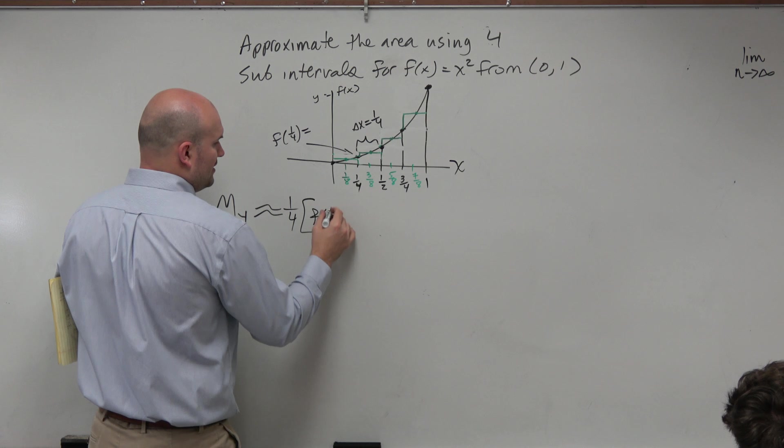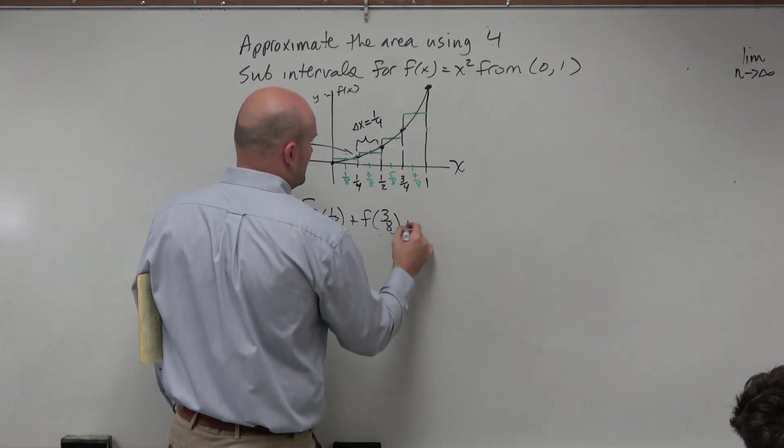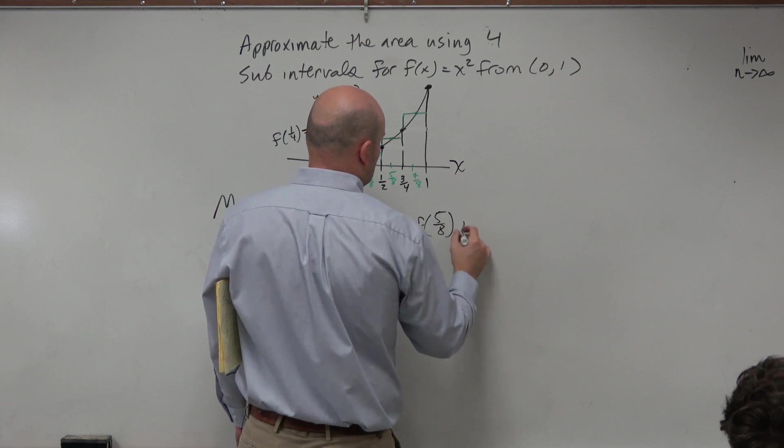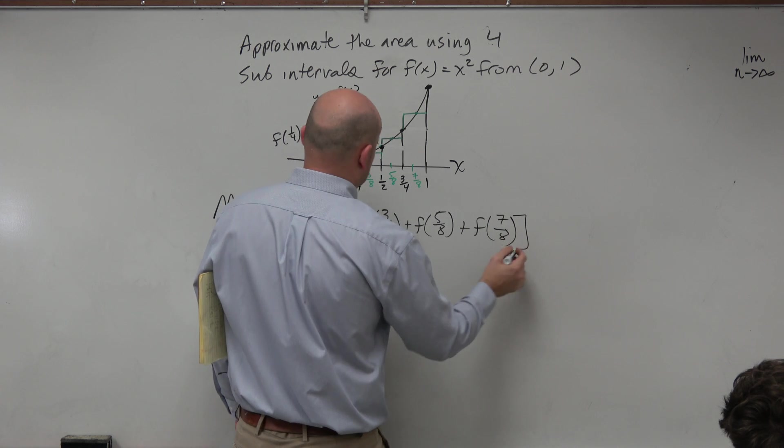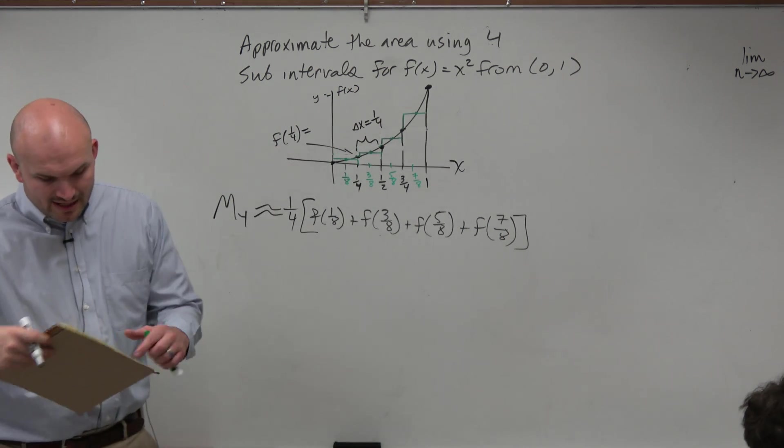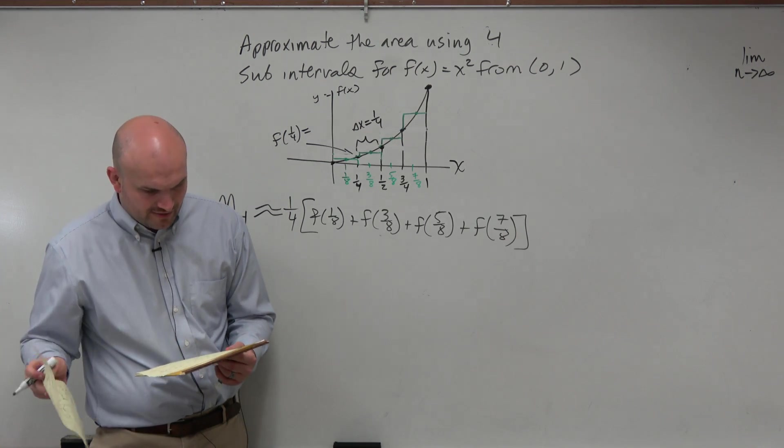And now, we're dealing with f of 1/8th, plus f of 3/8ths, plus f of 5/8ths, plus f of 7/8ths. And again, that factoring works out, in this case, because, again, we have that uniform factor with delta x.